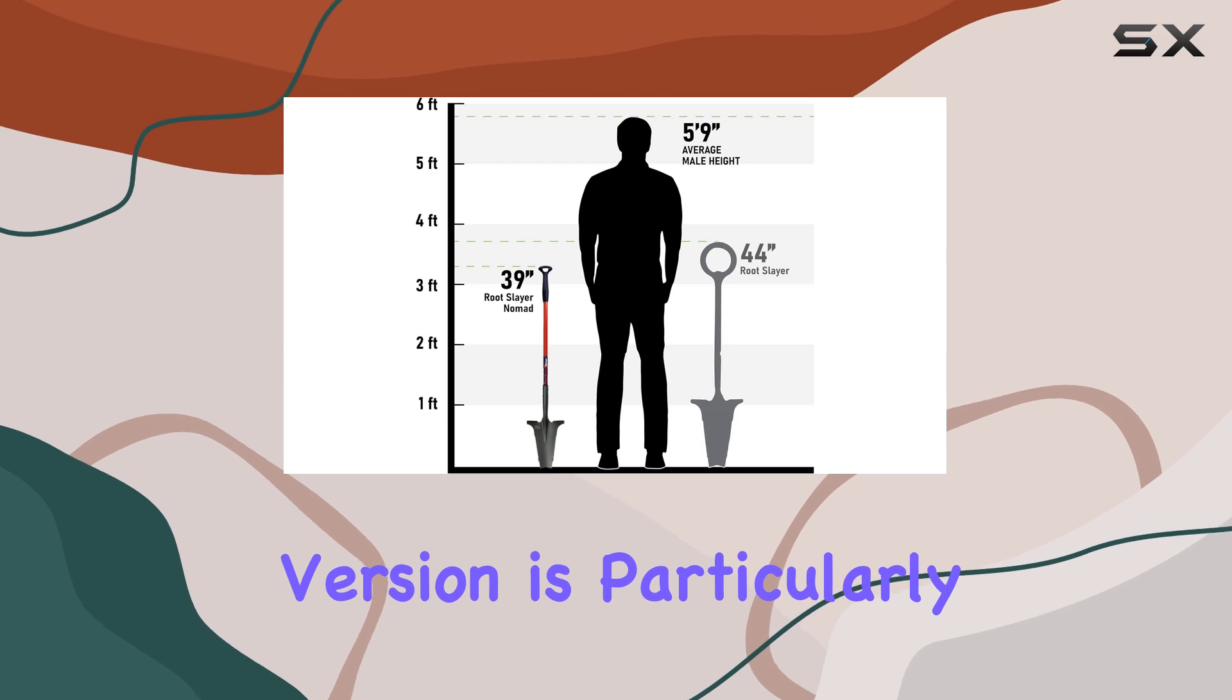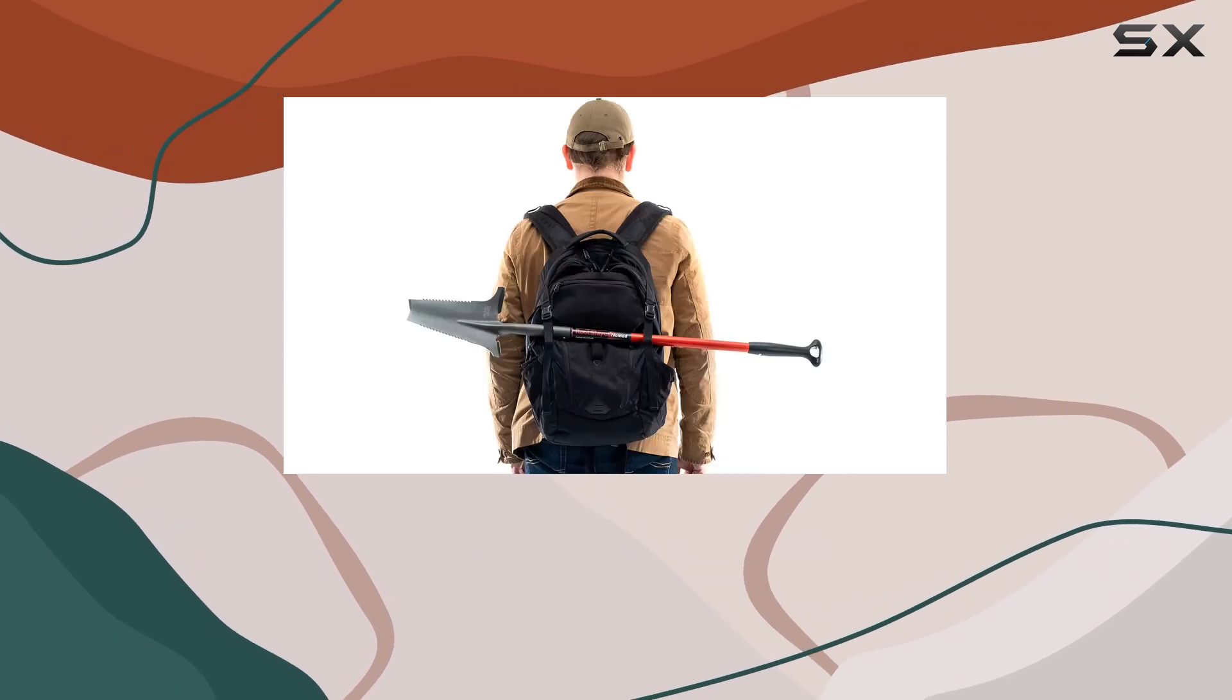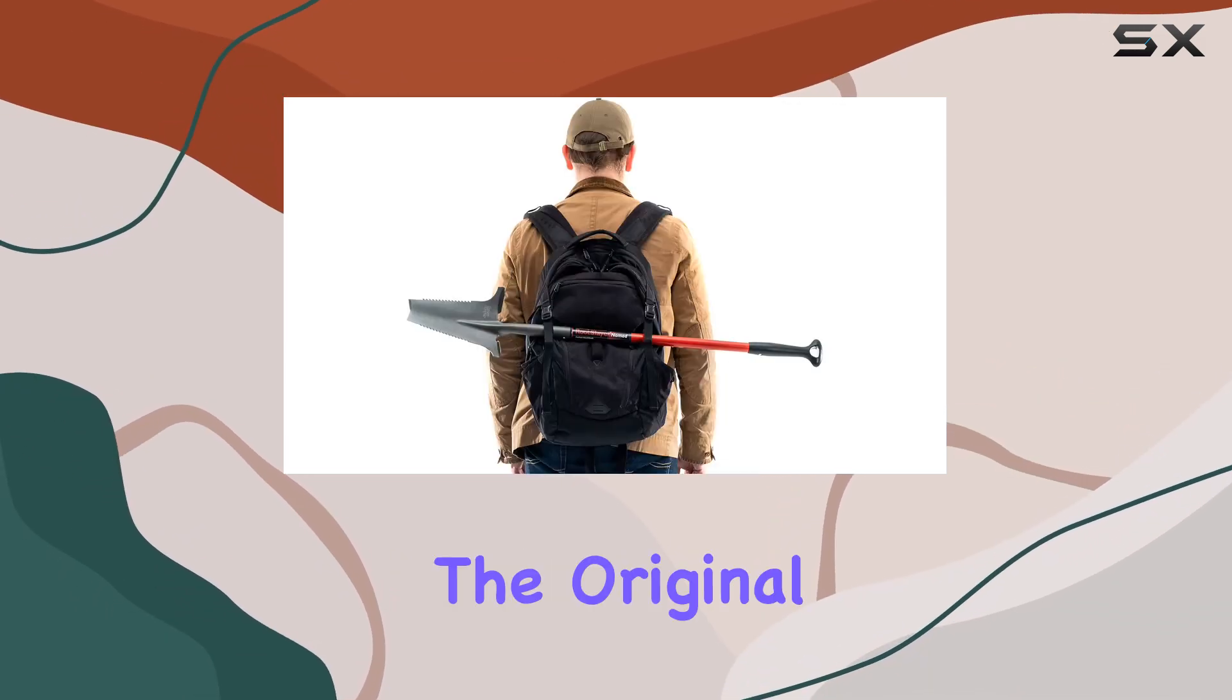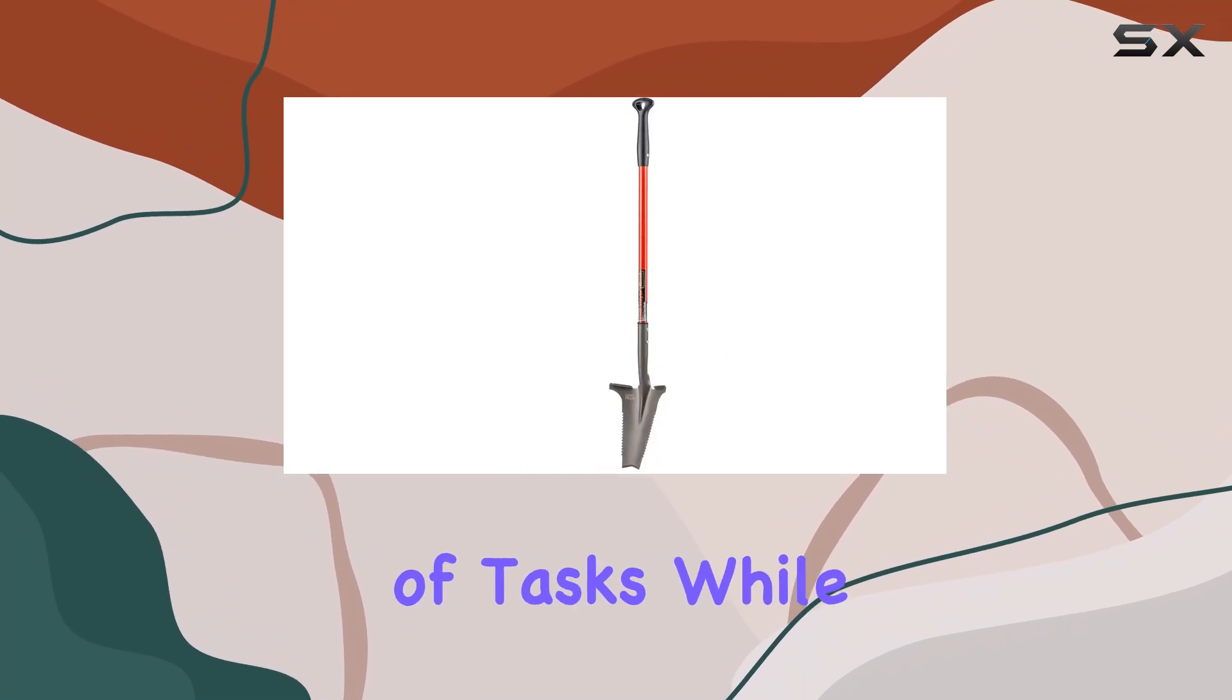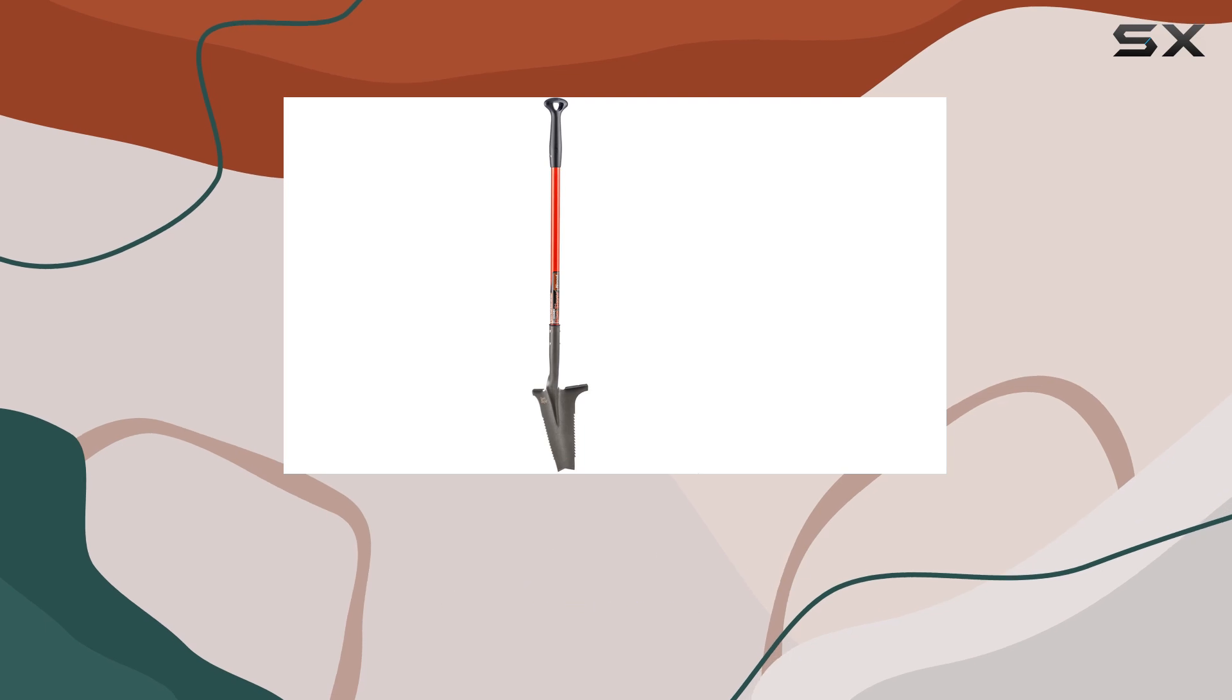The Nomad version is particularly impressive due to its reduced size – 70% of the original Rootslayer. This makes it more manageable for a variety of tasks while still delivering exceptional performance.